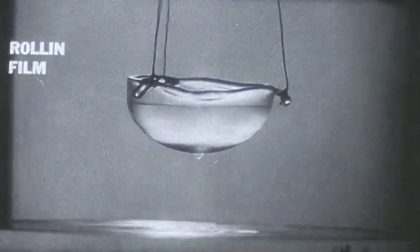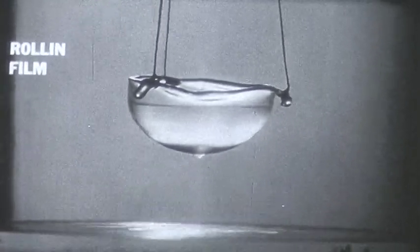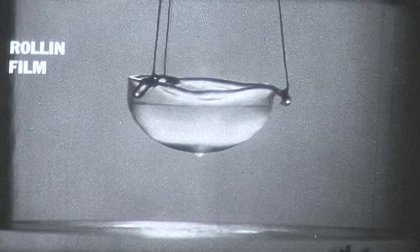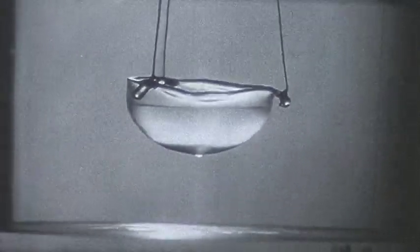Below the lambda point, the superfluid component of liquid helium creeps up along the walls of its container in an extremely thin film. It is known as the Rollin film. This creeping film is a variety of superflow. It is difficult to make the film itself directly visible to you.